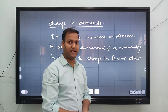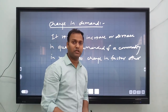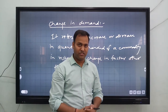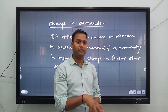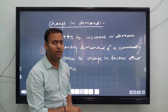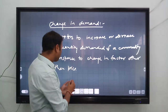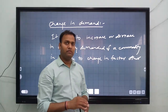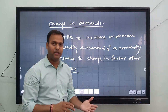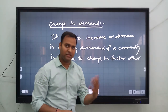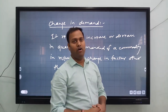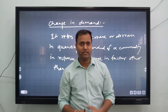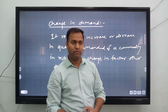Change in demand focuses on other factors like income of the consumer, price of related goods, and taste and preference of the consumer. These are the determinants where change in demand will follow. The price of that particular commodity is fixed. Maybe income increases or decreases, or taste and preference is favorable or unfavorable, or price of related goods increases or decreases.